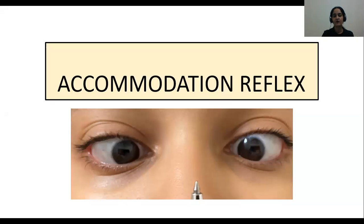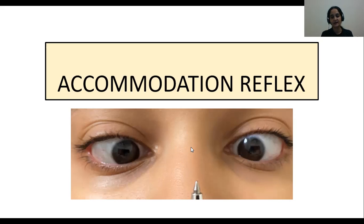While focusing on the object, certain changes occur in the eyes, and these form the Accommodation Reflex. One change you can see is where the eyeballs come closer to the nose, or move medially, which is called convergence of the eyes. There are other additional changes which we will see in the subsequent slides.